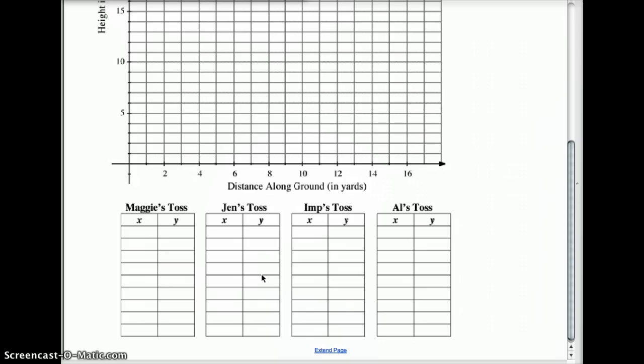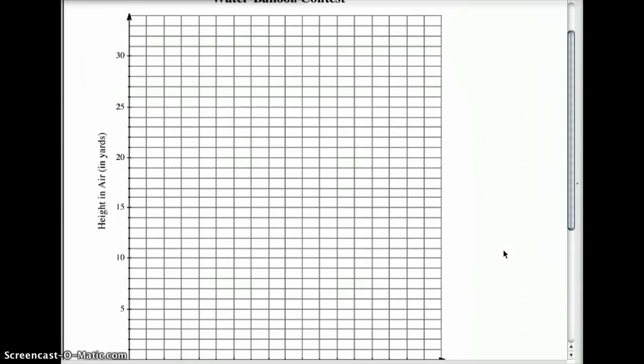One last thing I would like you to try and do. Now, this is not required. This is only for my more advanced honors and accelerated kids. See if you can create or figure out the rule for each equation. I think they gave you the equation for Maggie. But see if you can find the rule for the other ones based on either the graph or your chart that you put together. See if you can do that. If not, that's alright. We'll kind of talk about that in class. Hopefully that makes sense of what you're doing. We'll see your wonderful balloon toss results when you get back to class. Bye-bye.